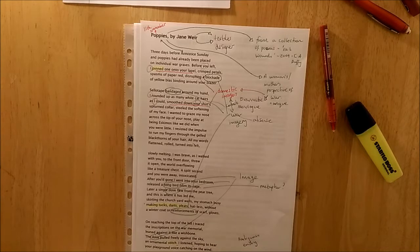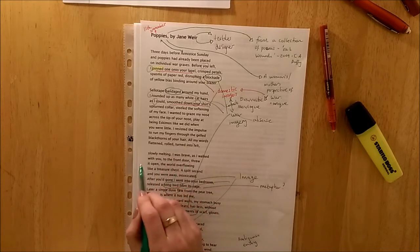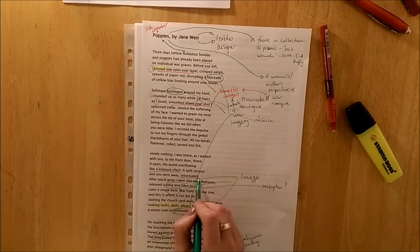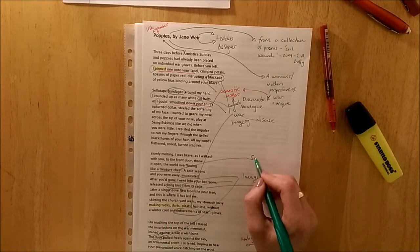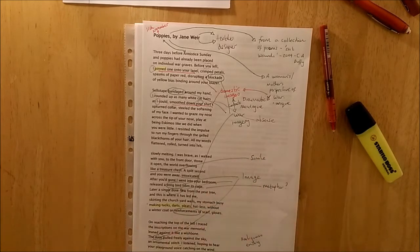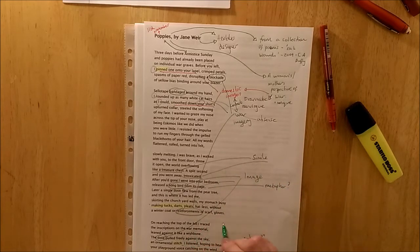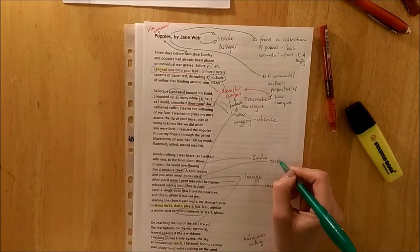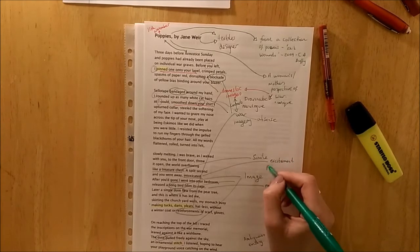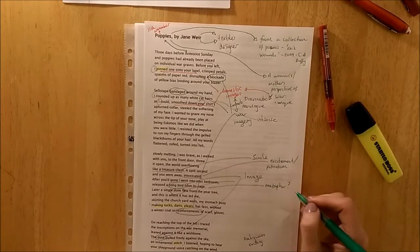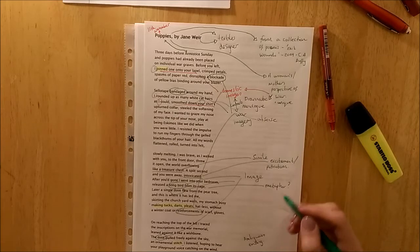Then as well, another very important quotation in this poem is here. The world overflowing like a treasure chest. A split second you were away, intoxicated. So you've got this simile here. Excitement like a treasure chest. Overflowing with goodness, with gems, with jewels. And then the intoxication as well. Which we can link here. Both show excitement for war. Potentially patriotism. Wanting to serve for one's country. Maybe arguably naivety. Not knowing what were to come.